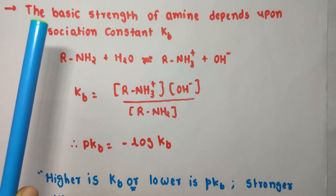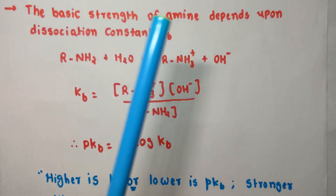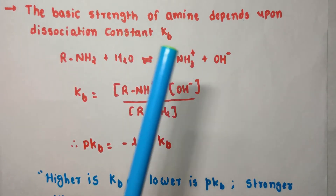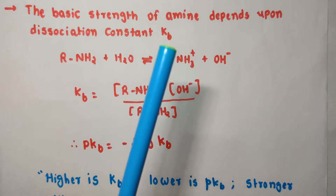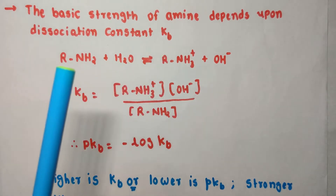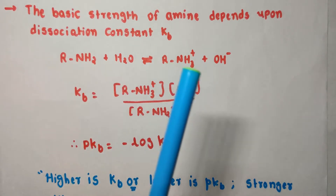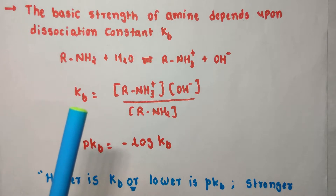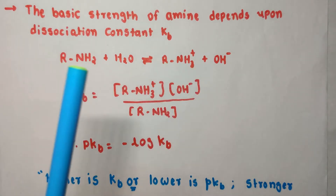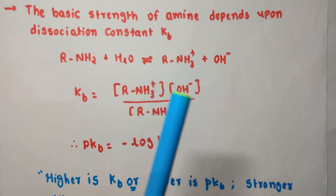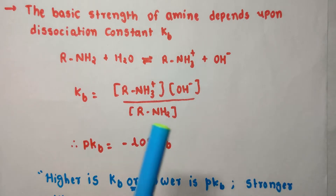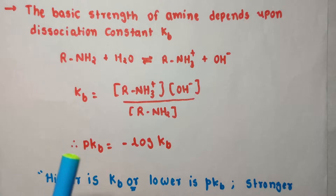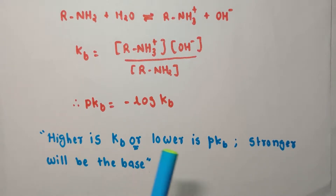Now let us see the measure for the basic strength of amines. The basic strength of an amine depends upon the dissociation constant Kb, which you have already learned in 11th standard equilibrium. When primary amine dissolves in water it gives RNH3+ and OH−. The Kb formula is: concentration of RNH3+ times concentration of OH− divided by concentration of RNH2. We also know that pKb is the negative log of Kb. Hence, higher Kb or lower pKb means a stronger base.